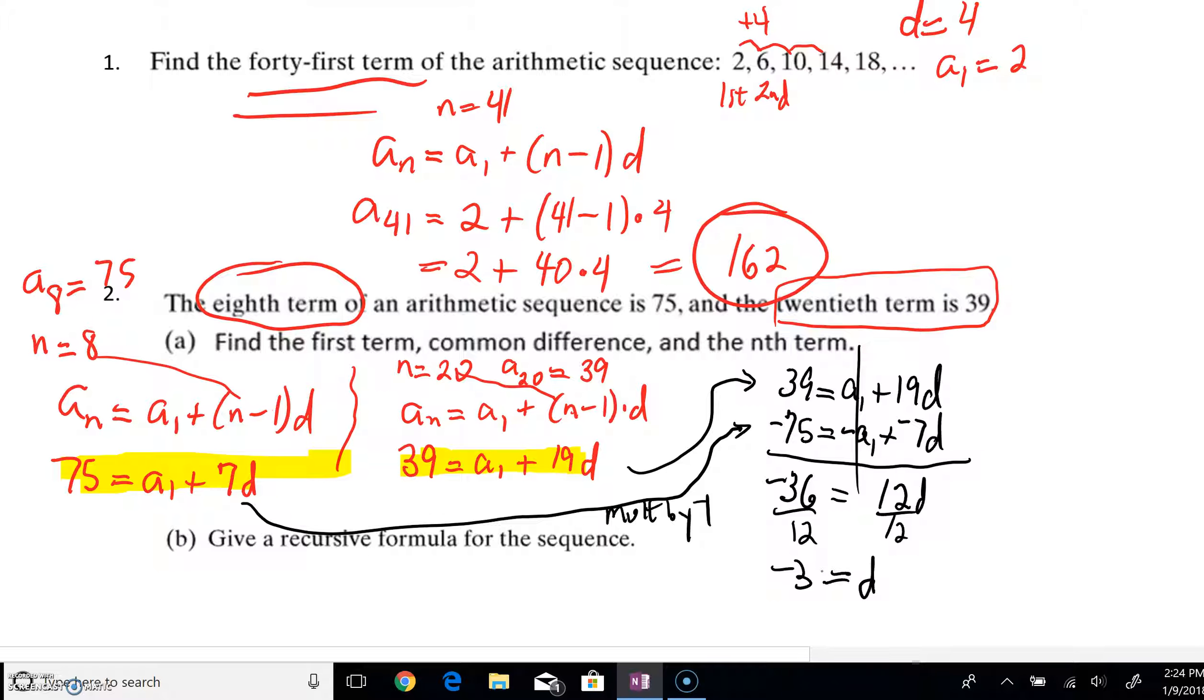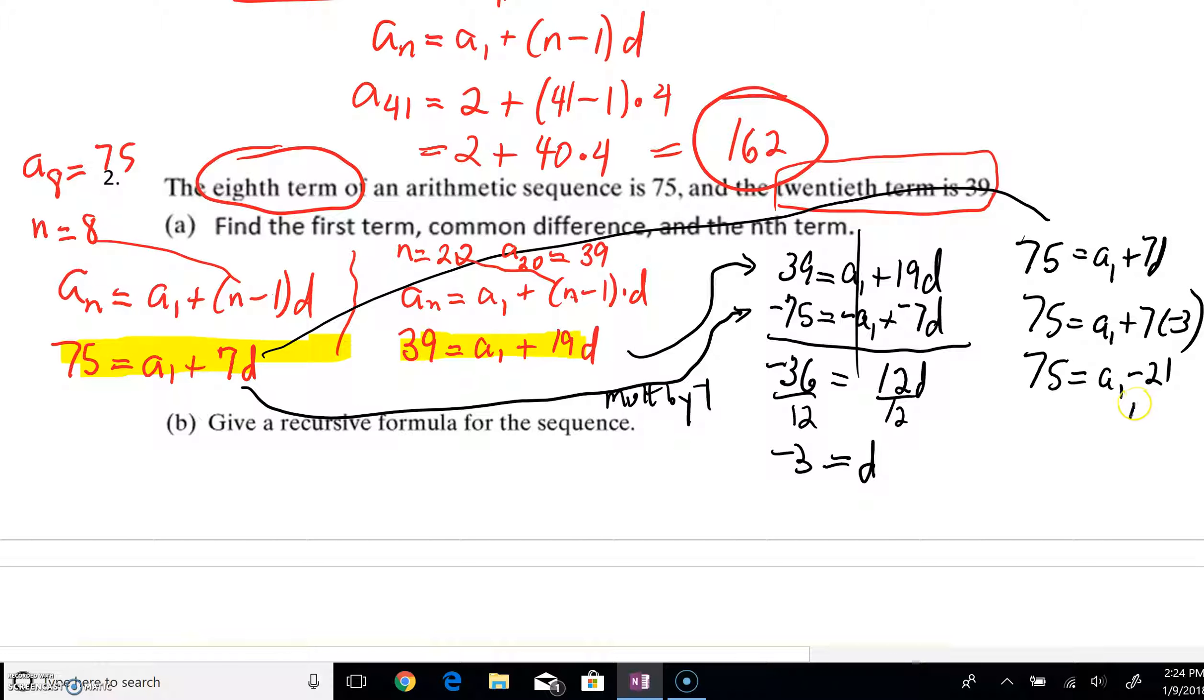Now, we're almost home. If we were to re-copy, say, our first equation, 75 equals a sub 1 plus 7d, we're going to now be able to say that that d value is negative 3. I'm going to plug that in. 7 times negative 3 is actually negative 21. And then we can just add 21 to both sides to get 96.